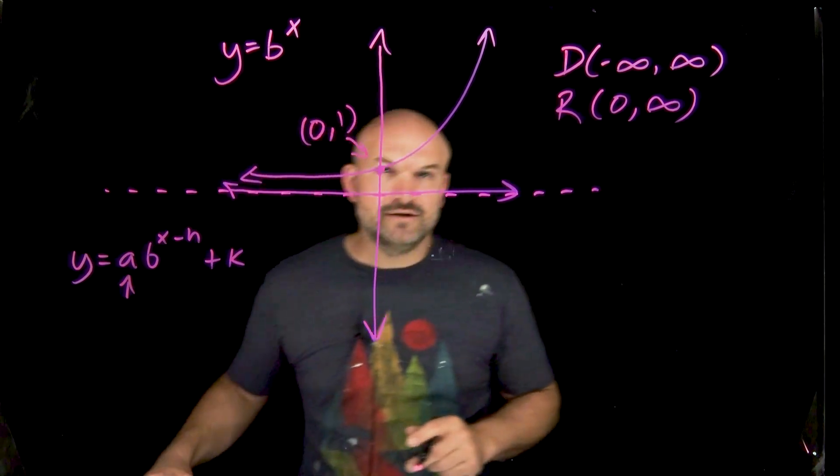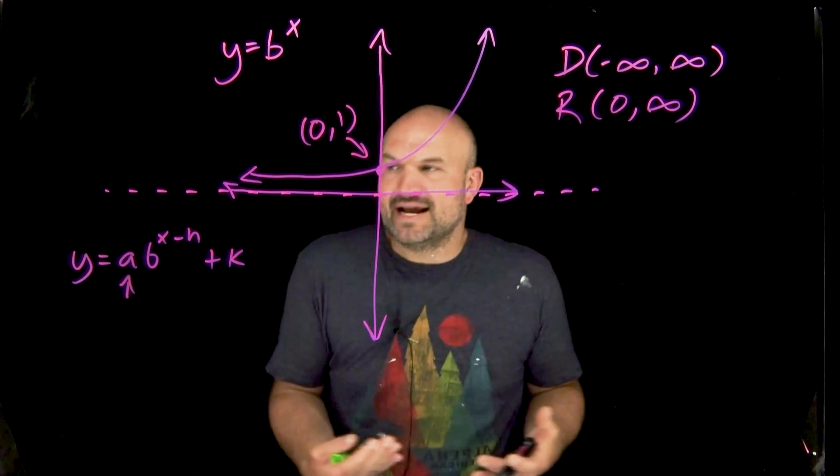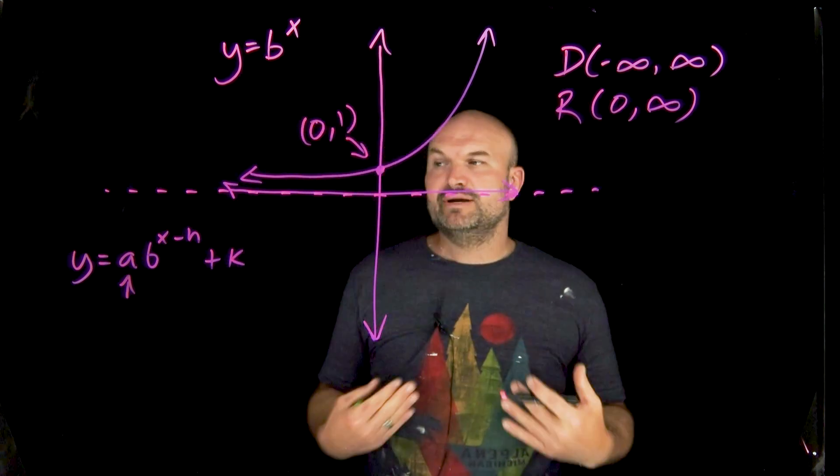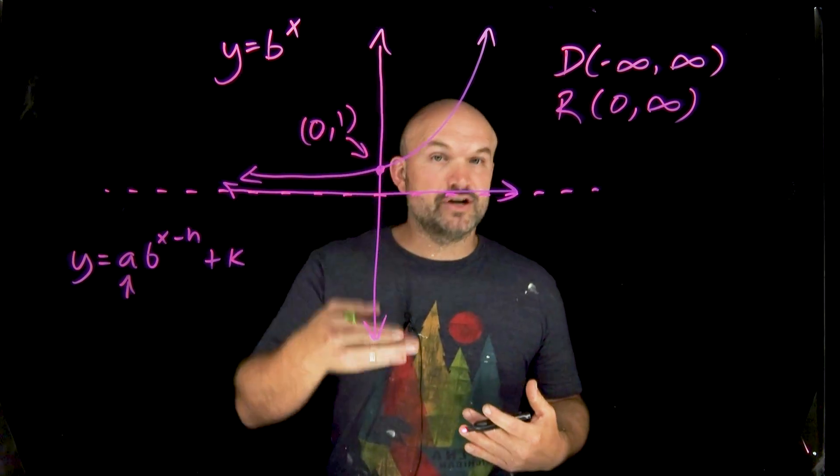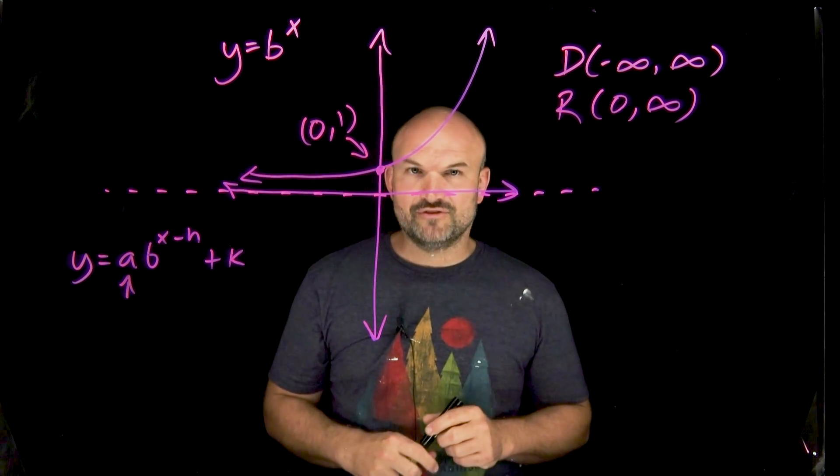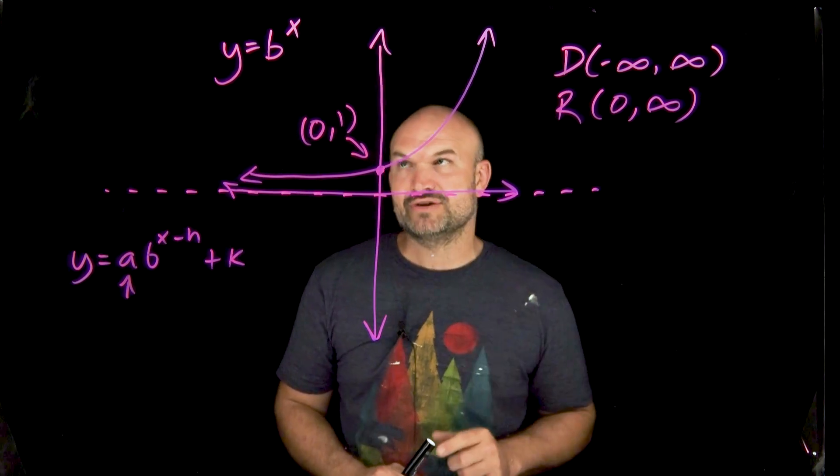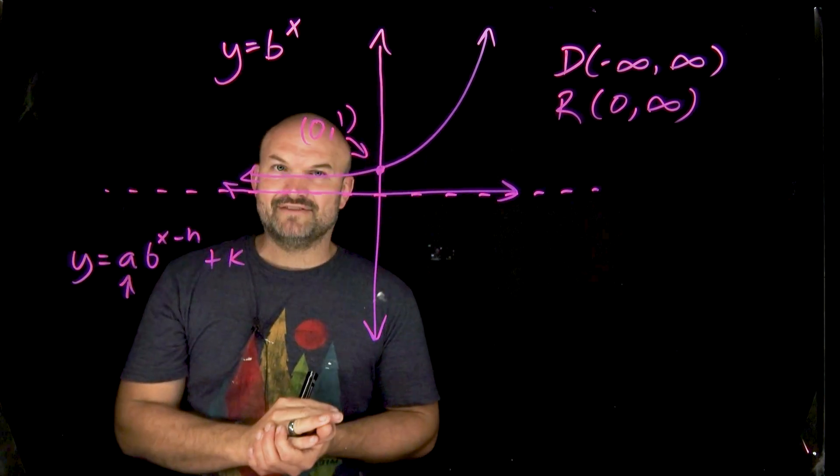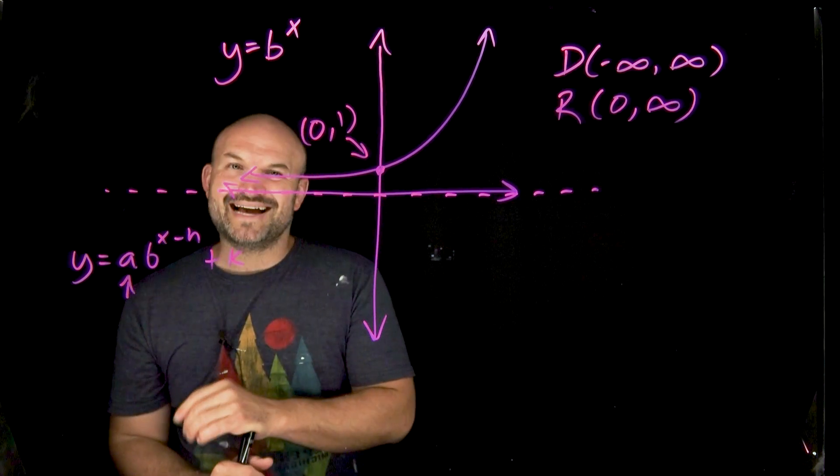We should be familiar with the a. Remember from quadratics or for radicals, anything that is going to be outside this function as a multiplier is going to be a reflection about your graph vertically, as well as a vertical stretch or compression. However, for exponential functions, this actually gets even more interesting because yes, you are going to be stretching or compressing the graph, but that's also going to be changing your x-intercept.